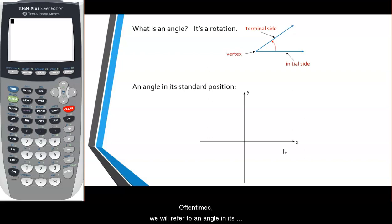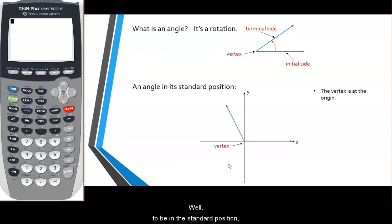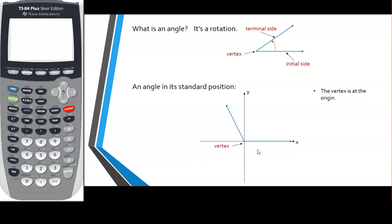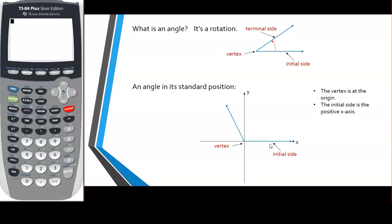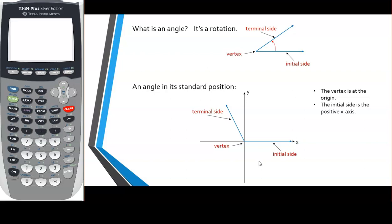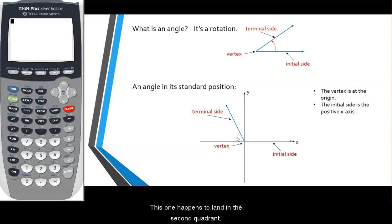Oftentimes we will refer to an angle in its standard position. To be in standard position, the vertex will be located at the origin on an xy-plane, and the initial side will be placed on the positive x-axis. Oftentimes we won't actually draw in the initial side, but it will be presumed to be the positive x-axis. Depending on the measure of the angle, the terminal side can land in any of the four quadrants. This one happens to land in the second quadrant.